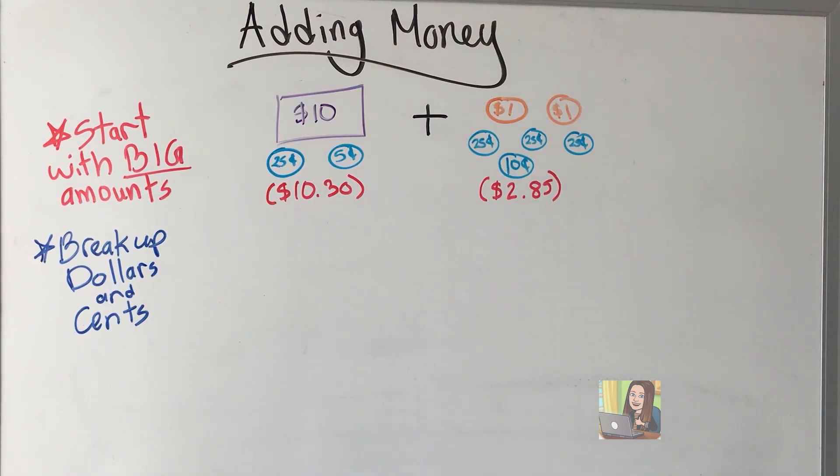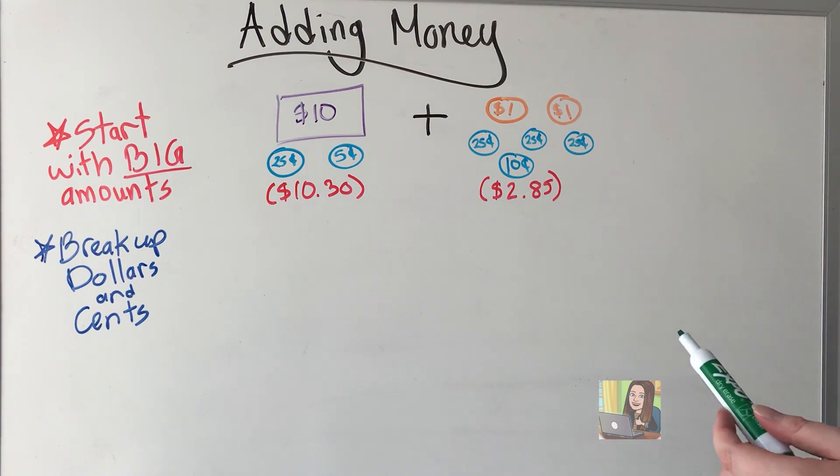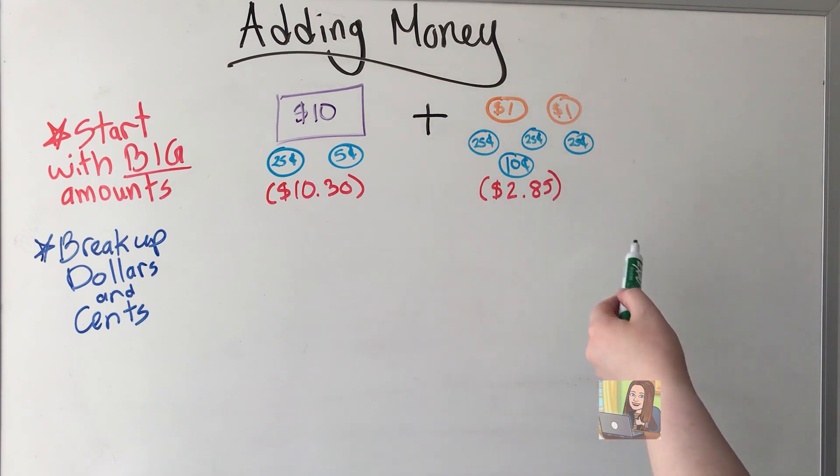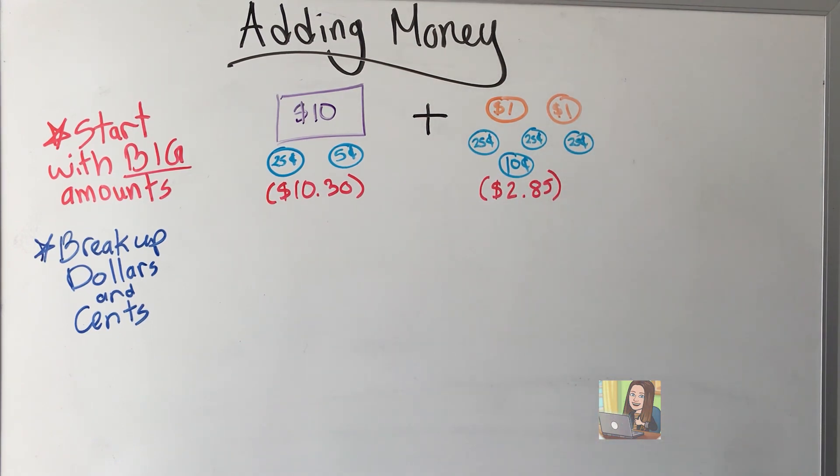Okay, our second example for adding money. Again, I've already counted up the totals for you. You can go right to stacking right here if you'd like, but I still like to break it up by dollars and cents to make sure that when I do stack it, I'm correct. So let's break it up.